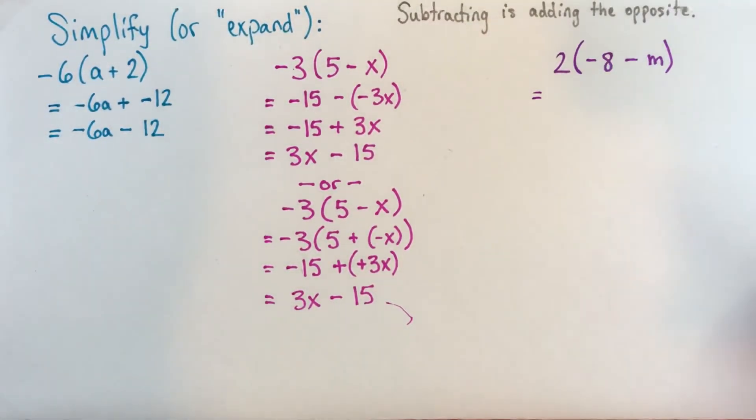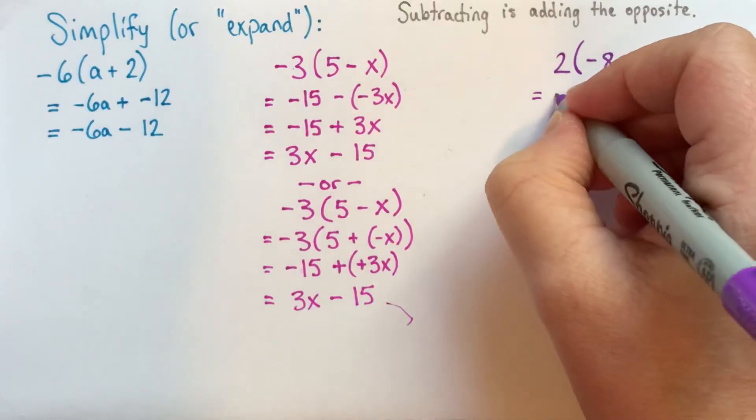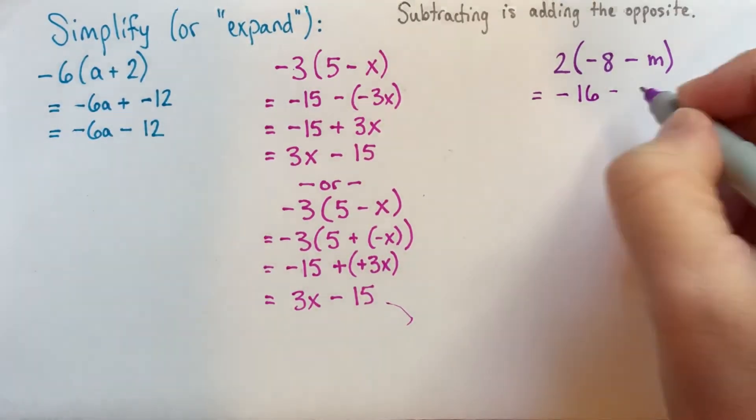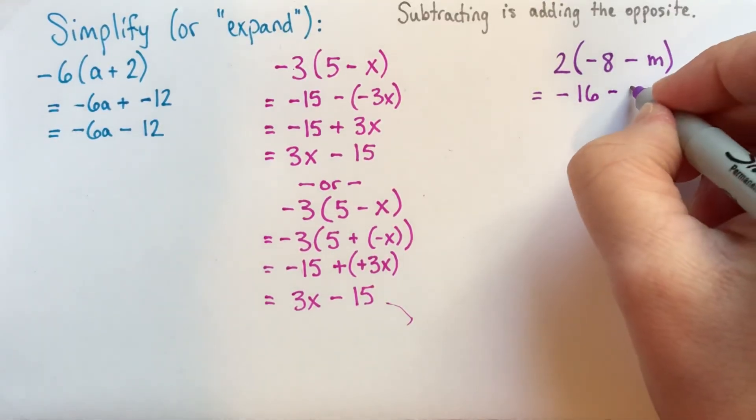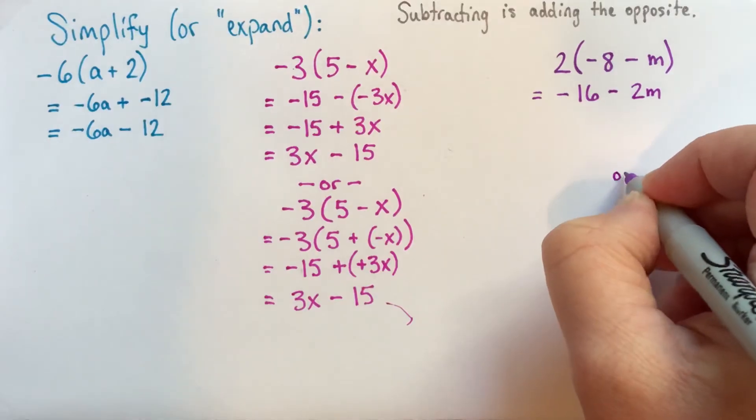So, the first way, I'll just consider it as subtraction. So, we've got 2 times negative 8, subtract m. So, 2 times negative 8 is negative 16. And then we'll be subtracting. And 2 times m is positive 2m.